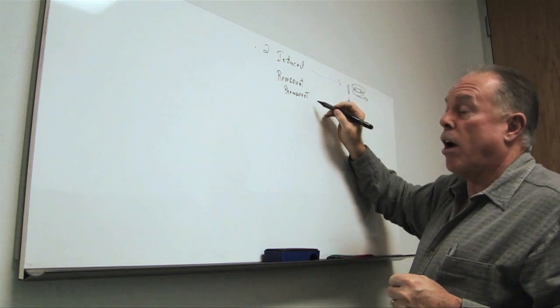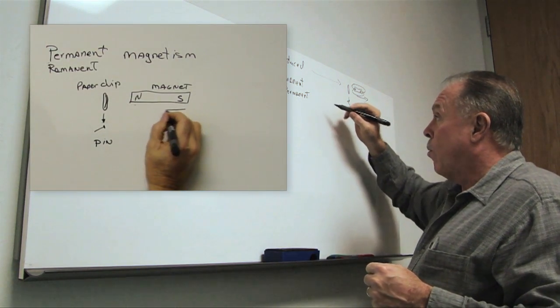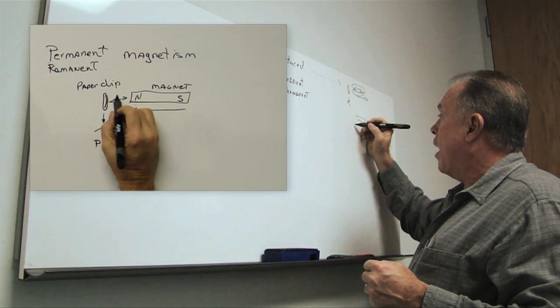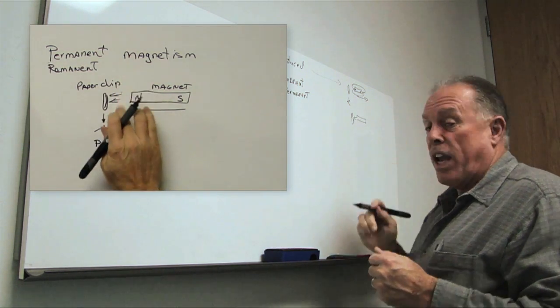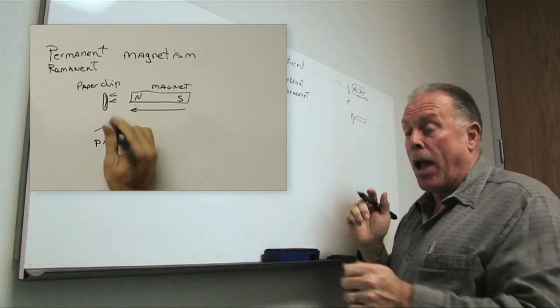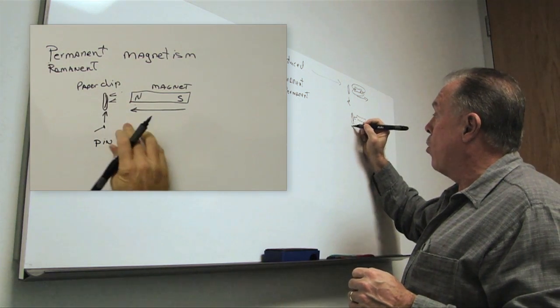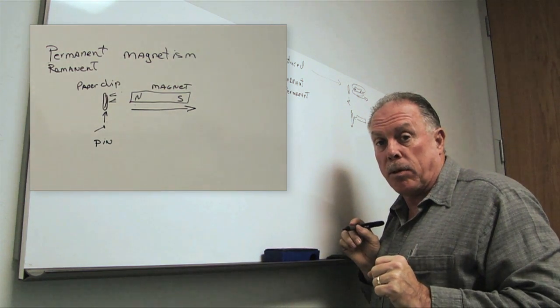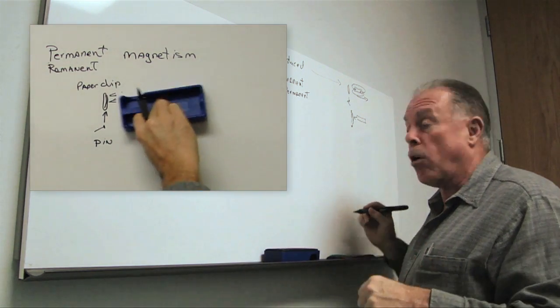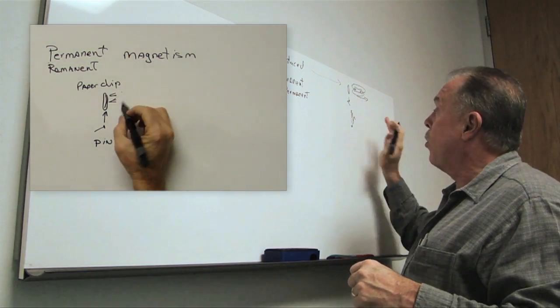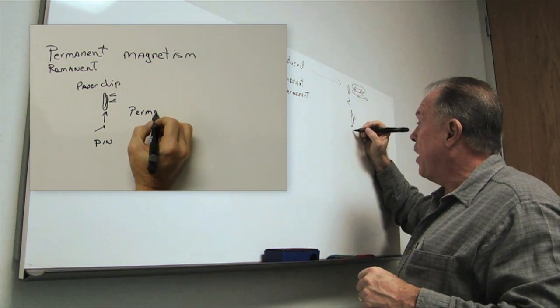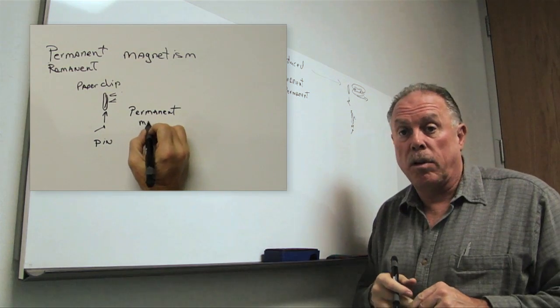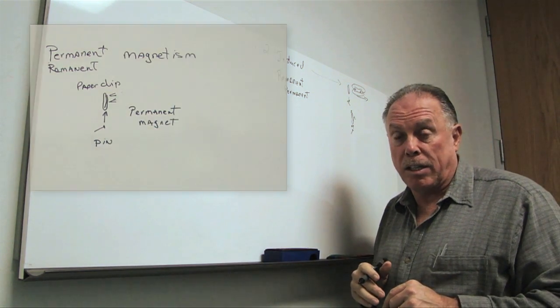Then we also have remnant or permanent magnetism. Remnant or permanent magnetism means that we have a magnet and we have a paper clip and we stroke the paper clip on the magnet and it becomes its own magnet. So now we have permanently magnetized the paper clip. So it becomes a magnet all of its own and even if we pull the magnet away, a pin will still be attracted to the paper clip. It now has permanent or remnant magnetism.